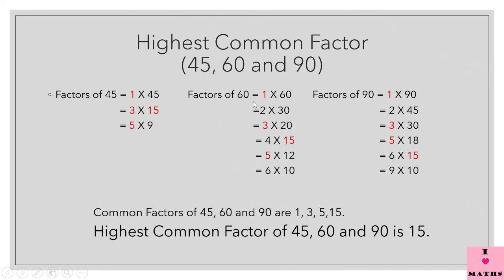Factors of 60: 1 × 60, 2 × 30 = 60, 3 × 20 = 60, 4 × 15 = 60, 5 × 12 = 60, 6 × 10 = 60. So 1, 2, 3, 4, 5, 6, 10, 12, 15, 20, 30 and 60 are all the factors of 60.